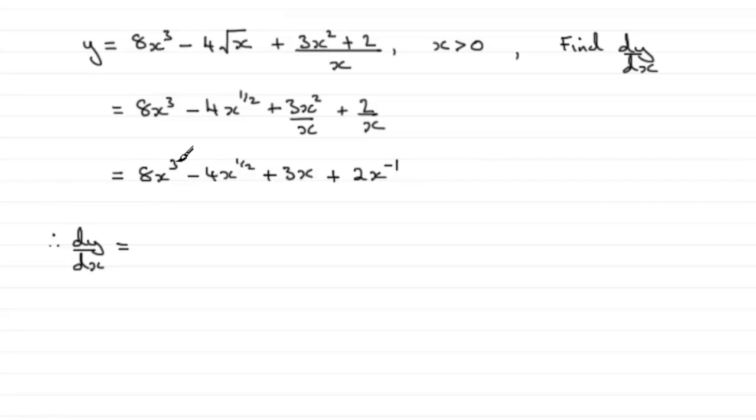So for this one, we've got 3 times 8, which is 24. Subtract 1 from the power and you've got x to the power 2, or x squared.